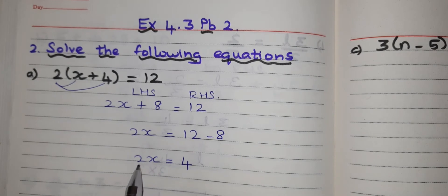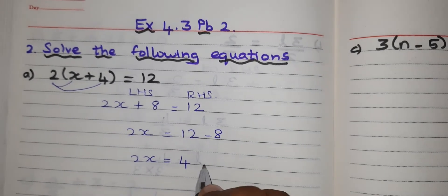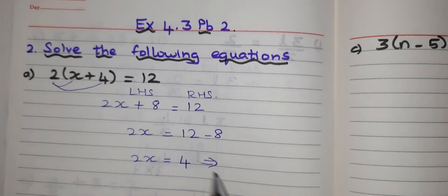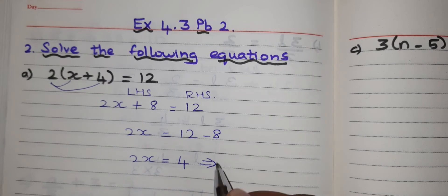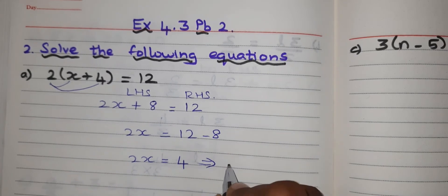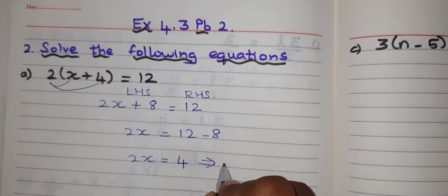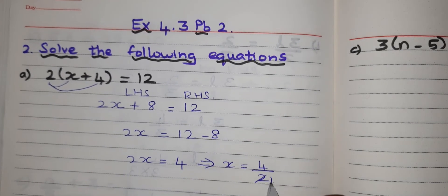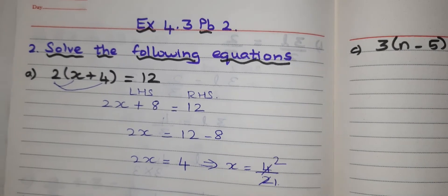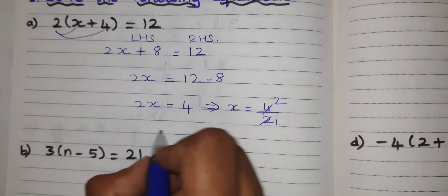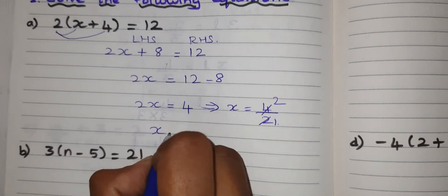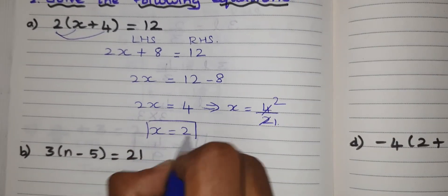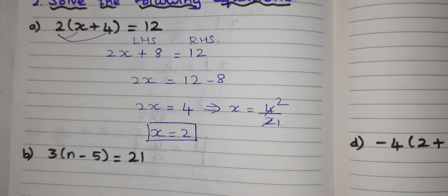Here I am having 2 into x. 2 into x means 2 multiplied with x. So when it goes to the RHS side, multiplication will become division. So x equal to 4 divided by 2. The answer is x equal to 2.